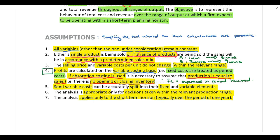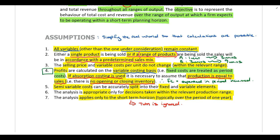Over that one year, we can assume that everything within the relevant range does remain constant. In addition, when performing all of these calculations, time value of money is ignored. Because these are short-term calculations, we don't have to worry about the impact of time value of money. If you are given a cost or revenue amount, you use that amount as it is — no need to worry about time value of money or inflation.